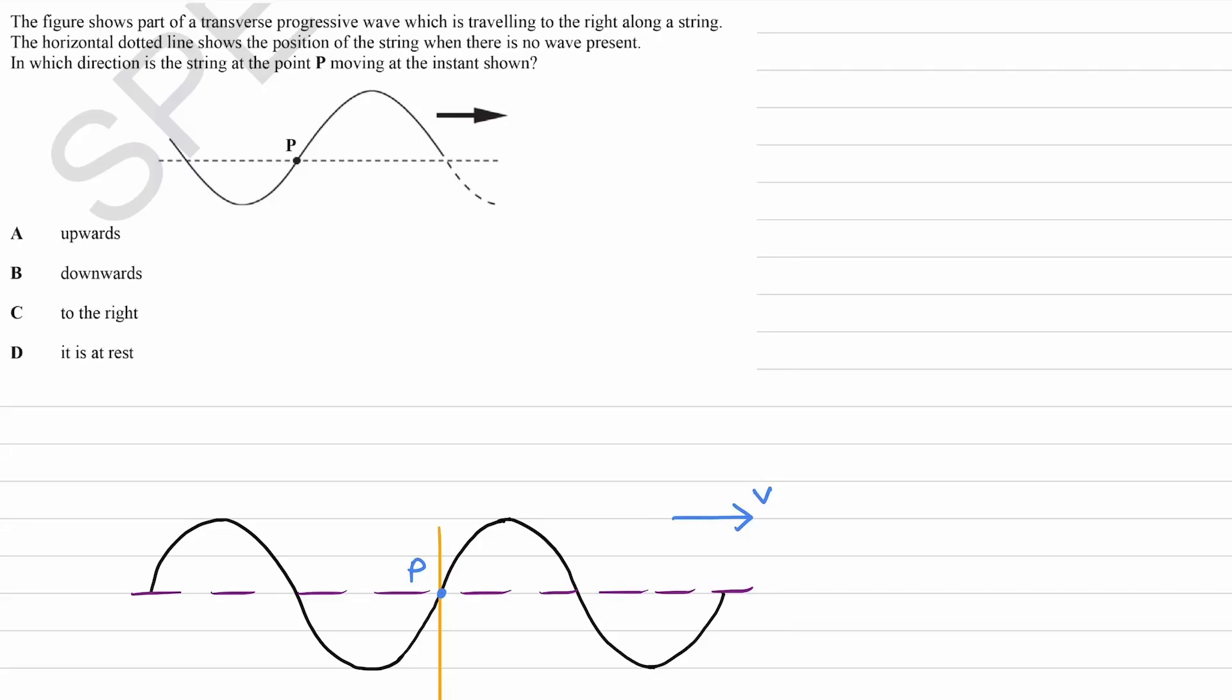The figure shows part of a transverse progressive wave which is travelling to the right along a string. The horizontal dotted line shows the position of the string when there is no wave present - basically this is the equilibrium position.